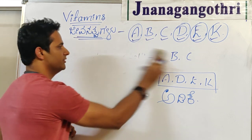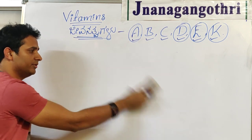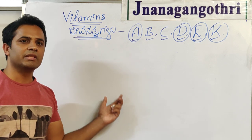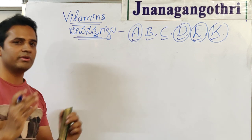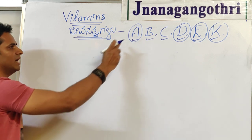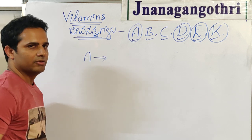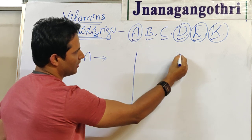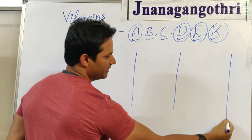This is the first concept you should learn about vitamins. As I told you, the next frequently asked questions are about deficiency disorders and chemical names of vitamins. How to remember the chemical name and deficiency disorder of each vitamin? We will start from vitamin A. I am going to write the chemical name and deficiency disorder using a shortcut.